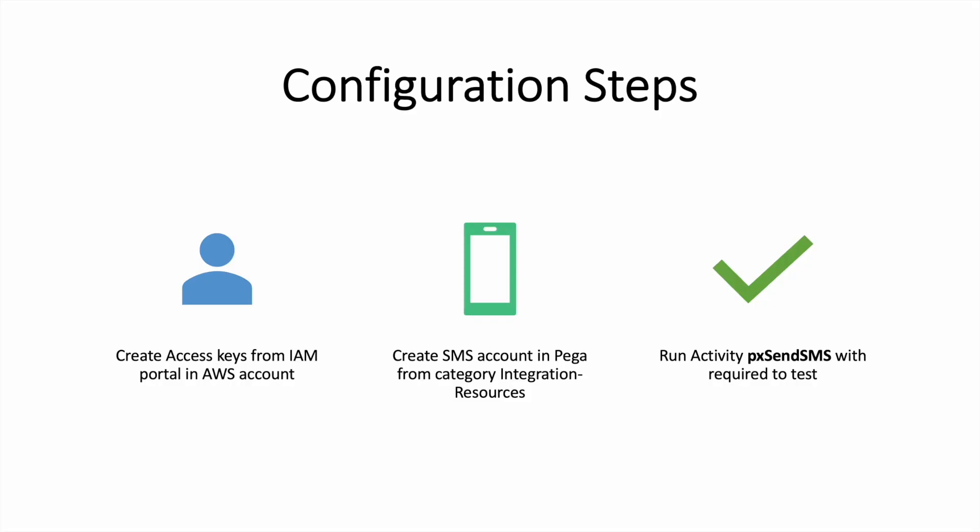Here I've mentioned the end-to-end configuration steps. The first step is to create the access key. AWS SNS is an API that AWS provides, so we need to give key details, sender information, and receiver information — similar to how we give SMTP details for email. Pega will internally call that API. You need to create access keys from the IAM portal in your AWS account, and you will get a key and a secret.